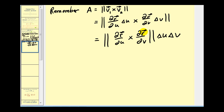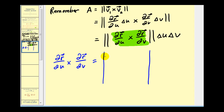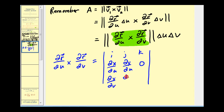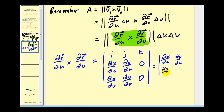Let's take a closer look at this cross product. It gives us a three by three determinant where the first row is i, j, k. For the second row, because r is defined using u and v, we have the partial derivative of x with respect to u, the partial derivative of y with respect to u, and zero for the k component. The third row has the partial derivative of x with respect to v, the partial derivative of y with respect to v, and zero. Because the third column is zero, the result is only a k component — the two by two determinant formed by the partials of x and y with respect to u and v, times k.